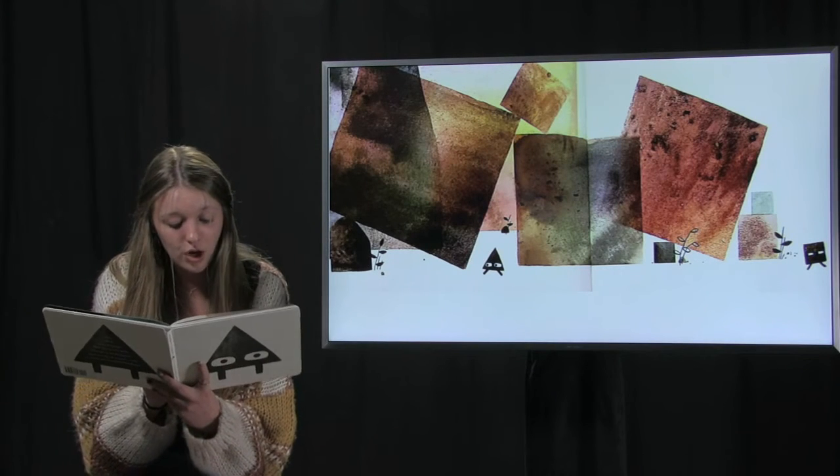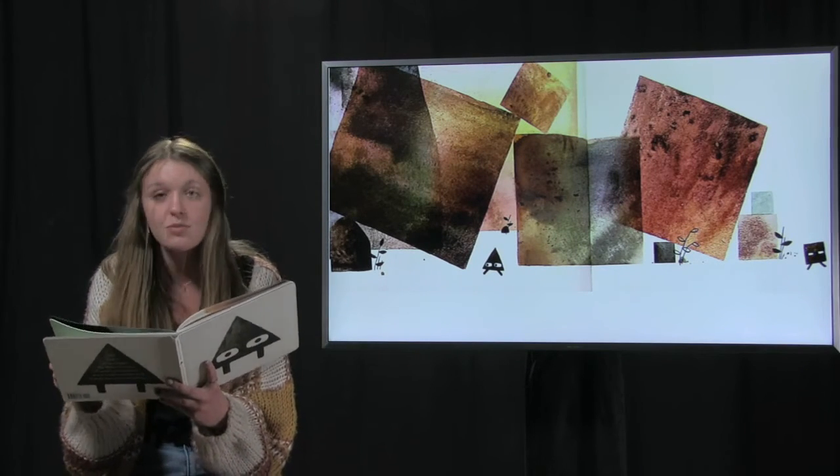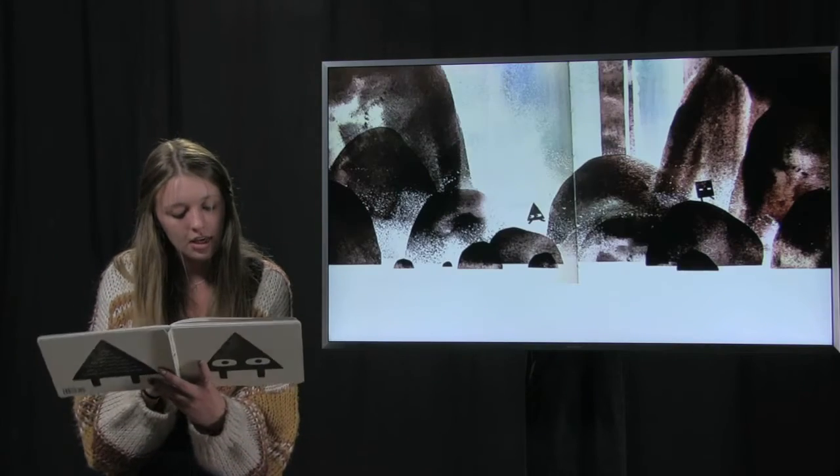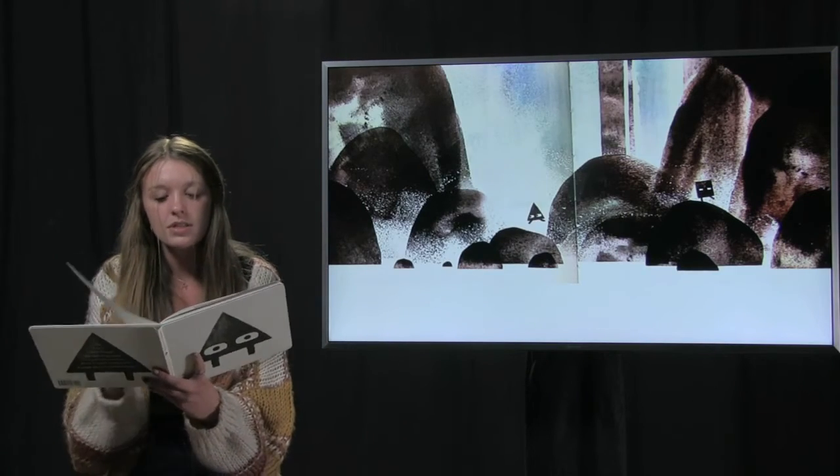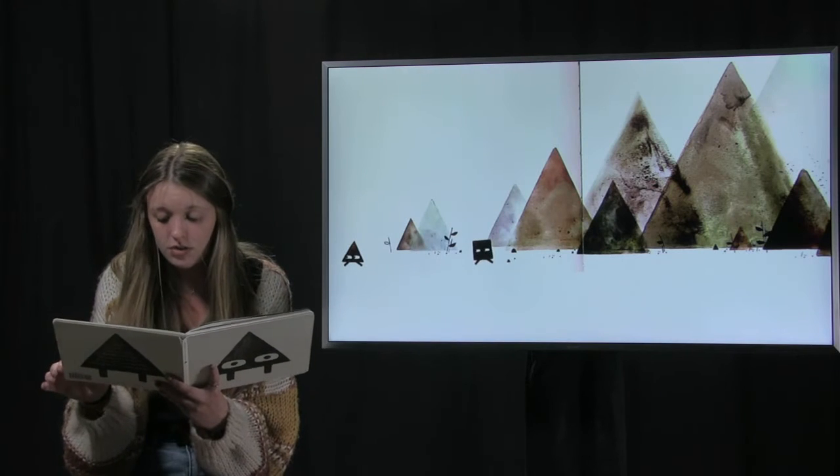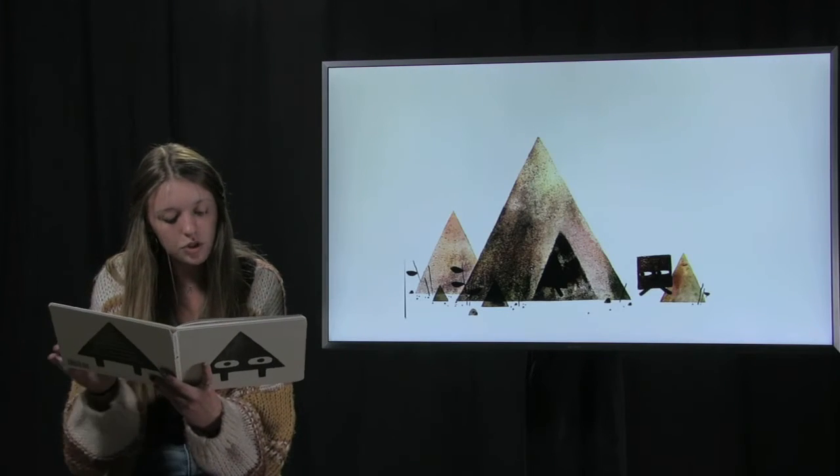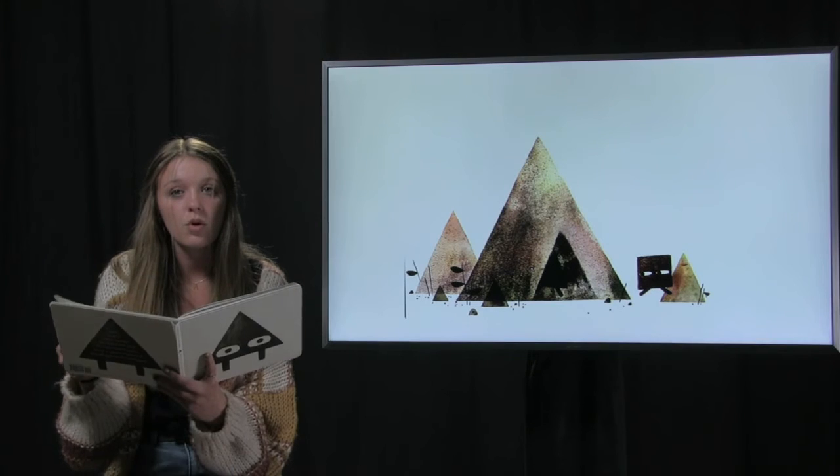Square ran after Triangle, past small squares and medium squares and big squares. He ran past the shapes with no names, past the big triangles and medium triangles and small triangles, up to Triangle's house and right through the door.